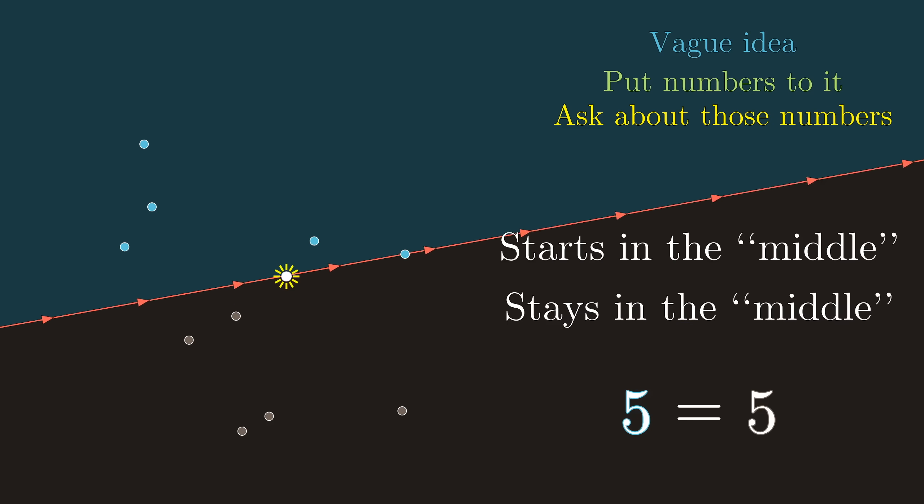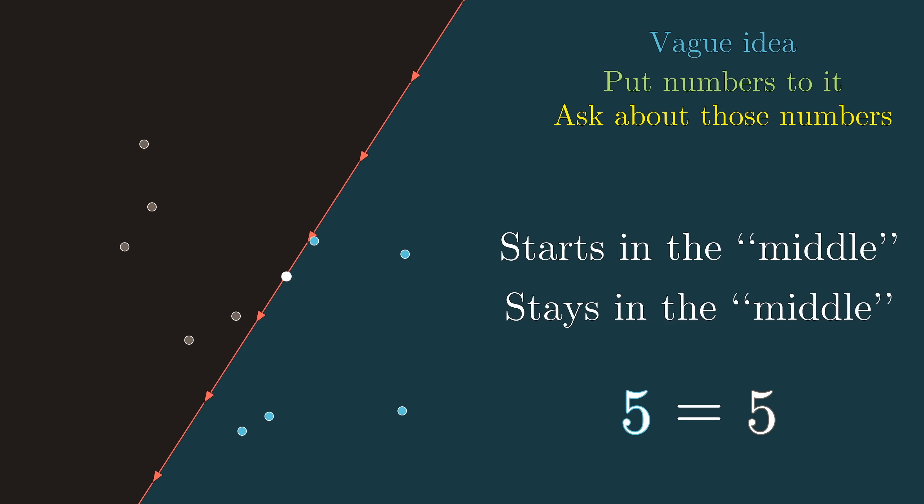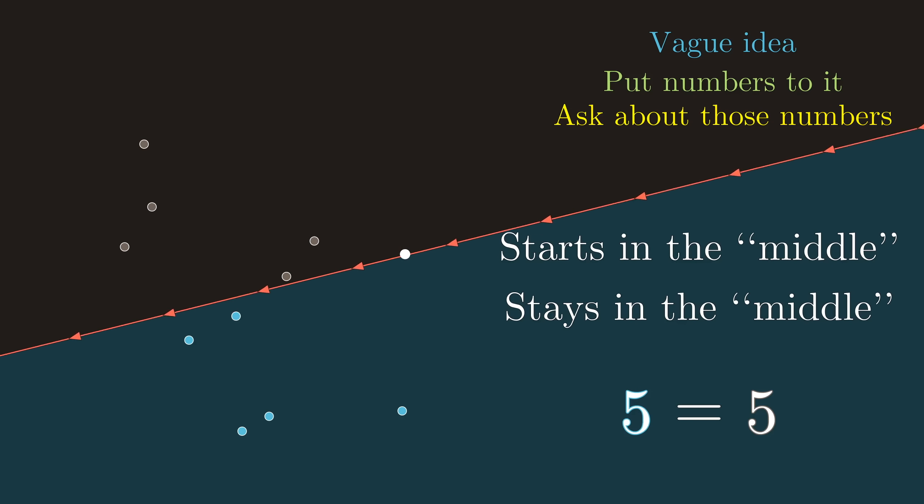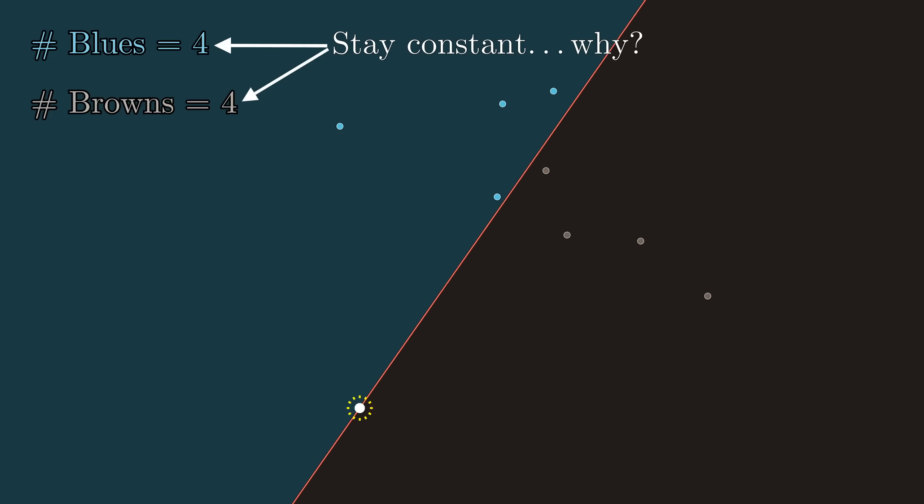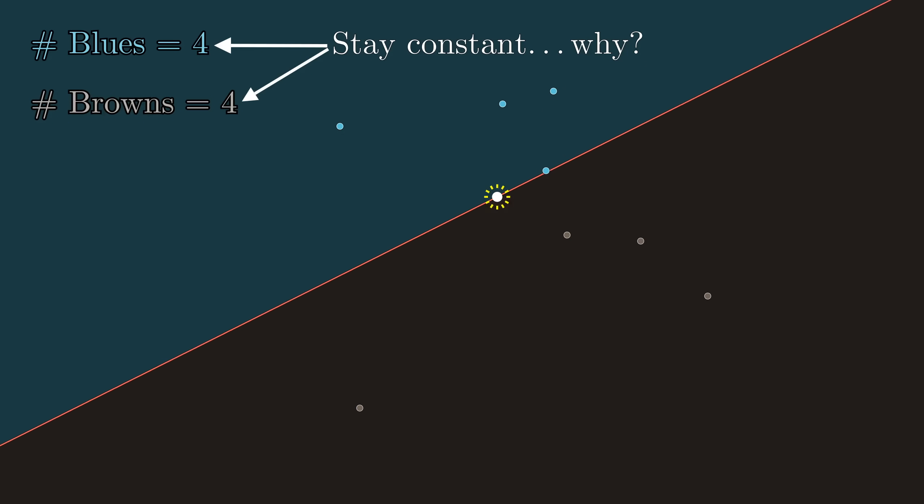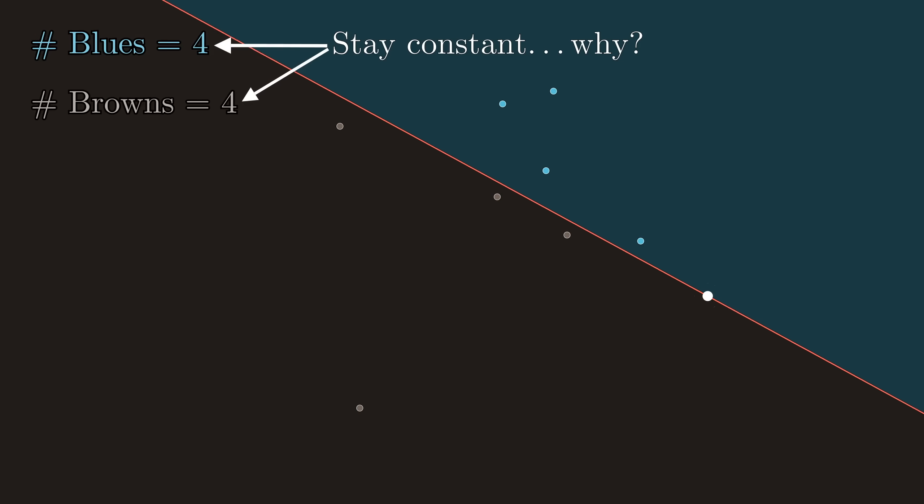In the example on screen now, you might notice it's always five and five, never changing. Playing around with other examples, you would find that the same is true. Take a moment to pause right now and see if you can think through why exactly that would happen. Why would these numbers not change?